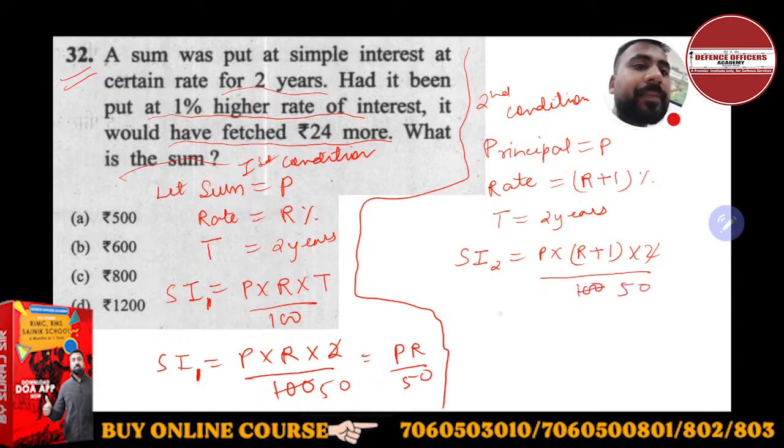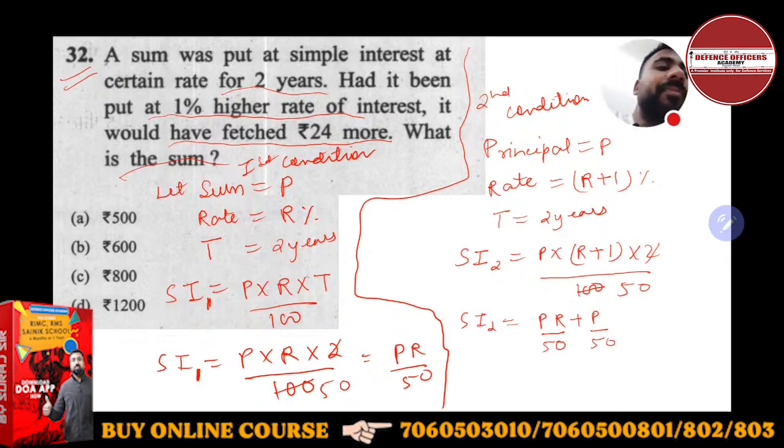So SI2 will be nothing but P × R + P / 50. Nothing but P × R + P / 50, or I can write PR / 50 + P / 50.